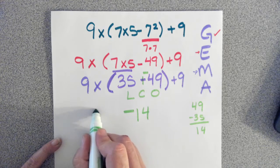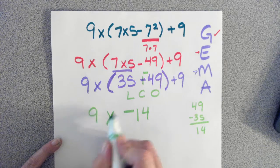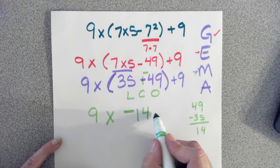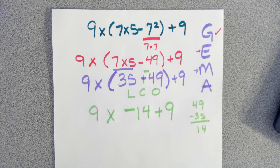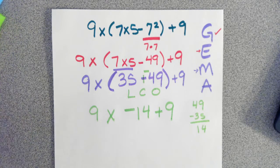Okay, now in the front, I still have my 9 times. Inside the grouping is negative 14. And then on the end, I have a plus 9. Okay, we're doing a great job. Let's keep going. Almost done.